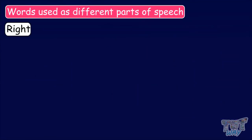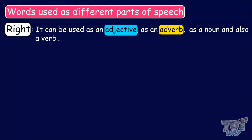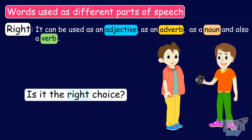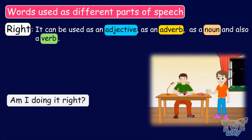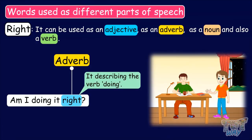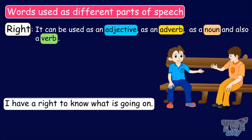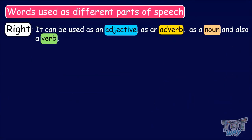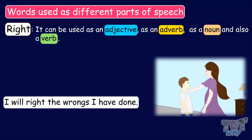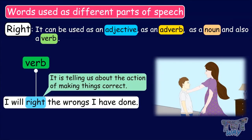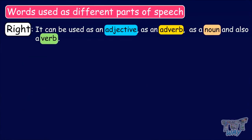Our next word is 'right'. The word right can be used as an adjective, as an adverb, as a noun, and as a verb. Is it the right choice? Here, the word right is used as an adjective, as it is describing the noun choice. Am I doing it right? Here, the word right is used as an adverb, as it is describing the verb of doing. I have a right to know what is going on. Here, the word right is used as a noun, as it is a naming word for a claim. I will right the wrongs I have done. Here, the word right is used as a verb, as it is telling about the action of making things correct. So, the word right can be used as an adjective, adverb, noun, and verb.